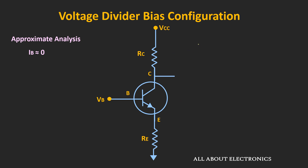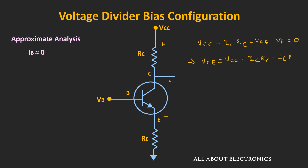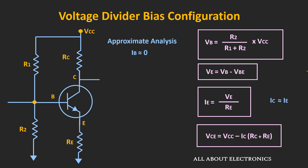Applying the KVL, we can write: Vcc minus Ic·Rc — that means the voltage drop across this resistor — minus Vce minus Ve, that is equal to zero. Or we can say that voltage Vce is equal to Vcc minus Ic·Rc minus Ie·Re. In this way, using this approximate analysis, we can find the operating parameters. And if we notice, these expressions are independent of β.